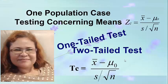This video is about one-population case testing concerning means — inferences from one sample, test for the mean mu. If the normal distribution is used, x-bar (the mean) as a test statistic is transformed into the z-statistic using the formula: computed z equals x-bar minus the hypothesized value of mu, divided by